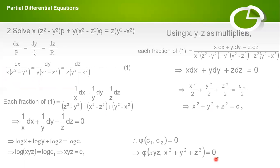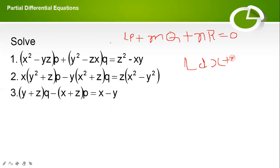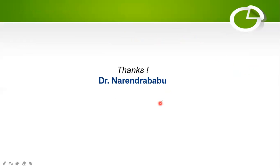In this way we can choose l, m, n such that l·P + m·Q + n·R = 0, giving l·dx + m·dy + n·dz = 0 as the solution. We can find the solution using the method of multipliers by choosing l, m, n either as constants or as functions of x, y, z. Thank you for watching — please subscribe.